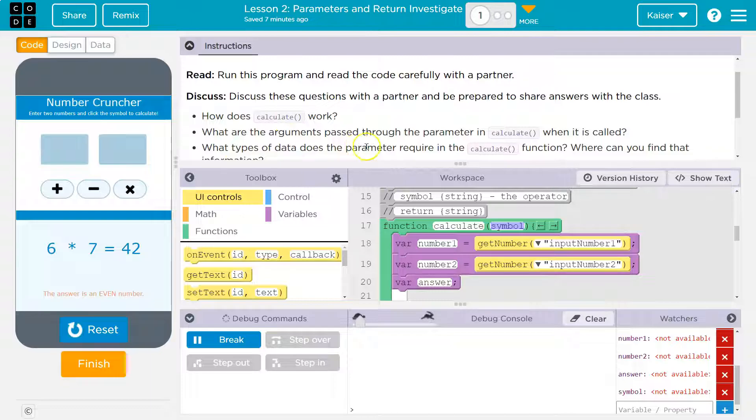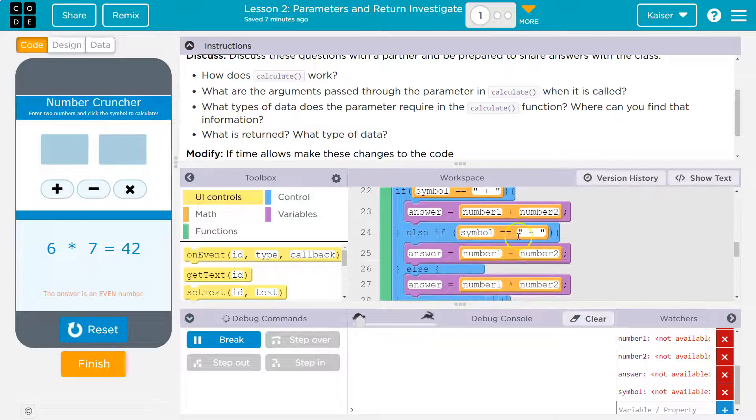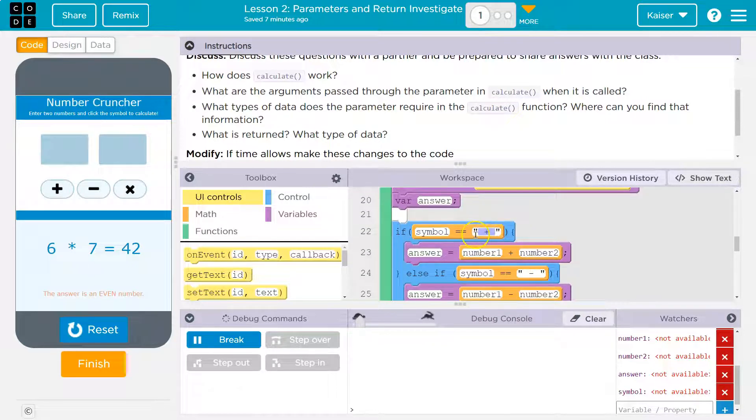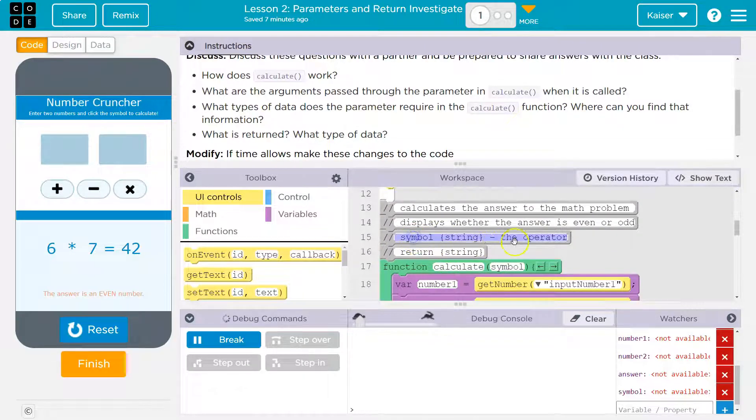What types of data does the parameter require in the calculate function? Where can you find that information? Well, it would require a string because look at this. It is in quotes, right? It also shows me here, symbol string. So we can add comments. Comments are just for programmers that explain what's going on. The computer skips over a comment, but if you're working on a big team of people who code, you might leave messages like, hey, don't touch this, it's mine, or even better, messages explaining what stuff does. So if you need to go back later, you'll know how to fix it.